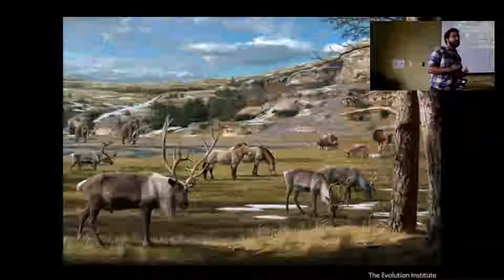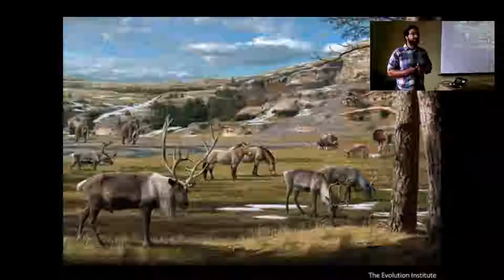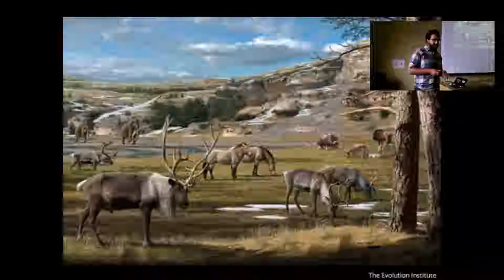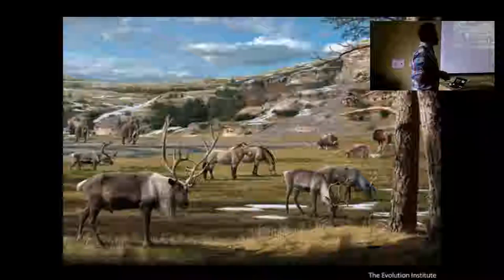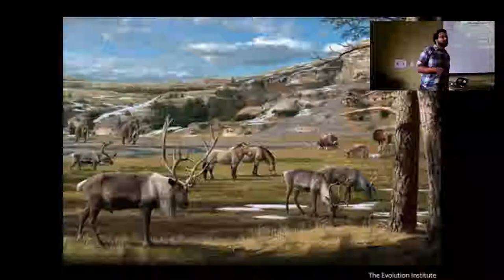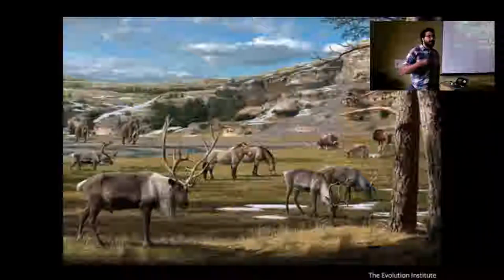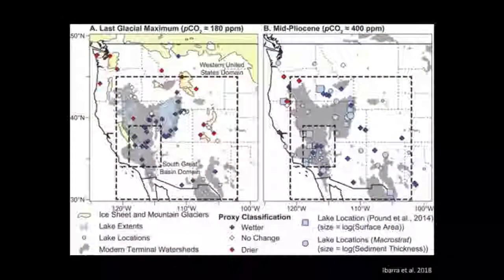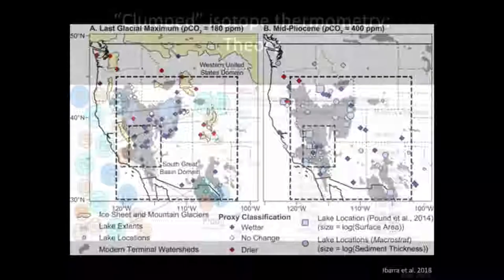Our lab is an isotope geochemistry lab combined with a paleoclimatology lab. A lot of the work we're doing is using isotope geochemical measurements to better understand paleoclimatology and paleoecosystems. Here we have the warming out of the last glacial maximum — a stereotypical environment — and we're trying to understand what was the plant ecosystem here, what was the water balance, what was the temperature change, so that we can better understand how ecosystems respond as climates change.